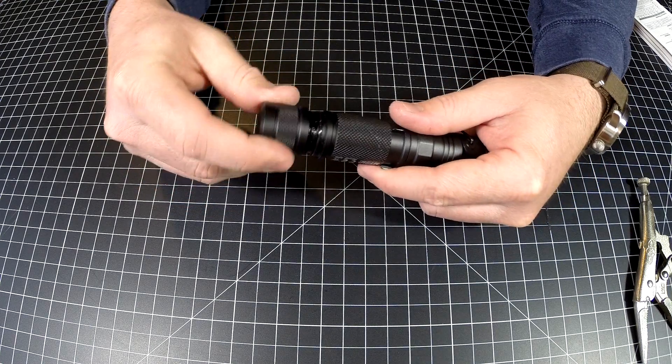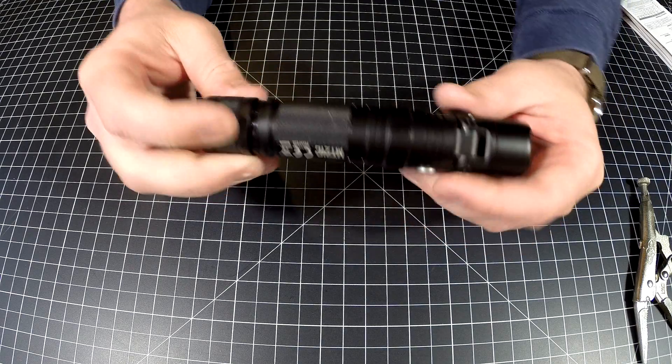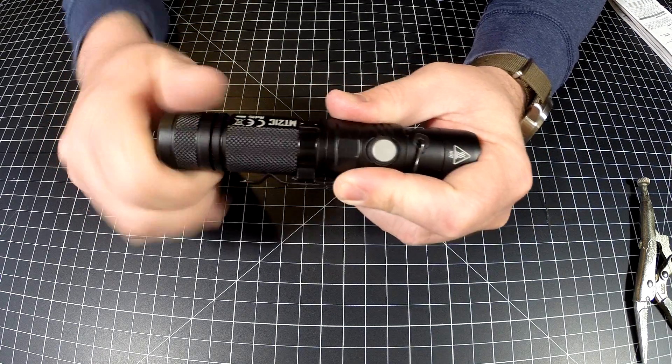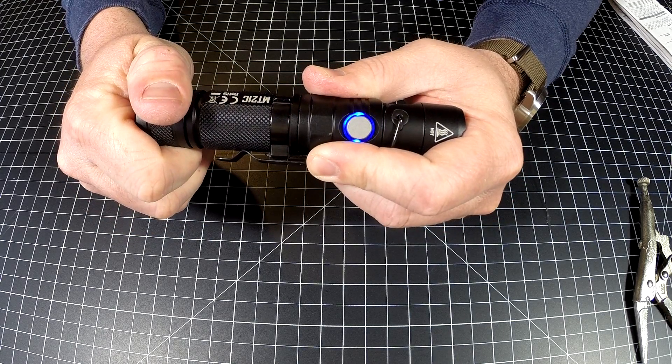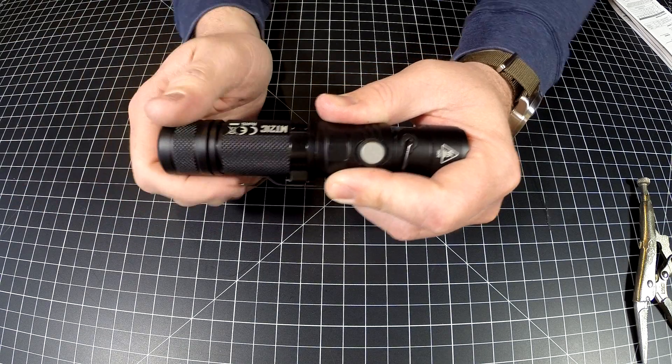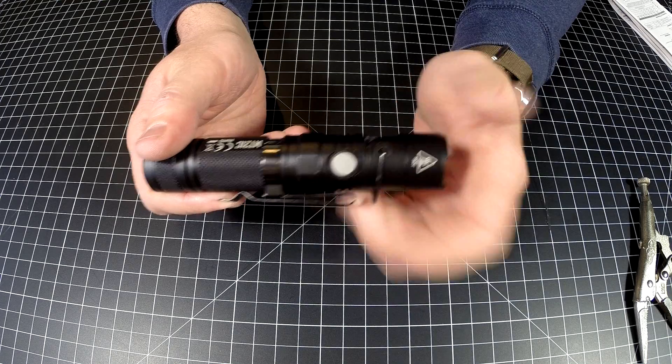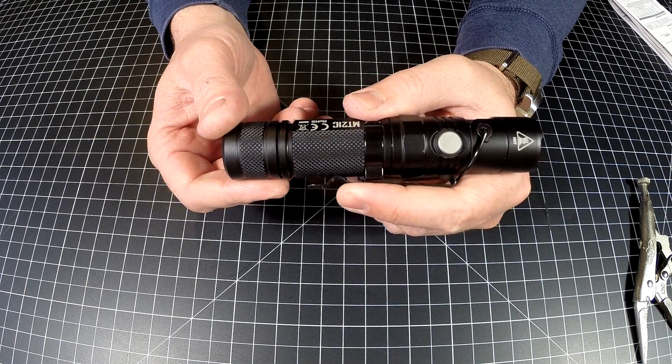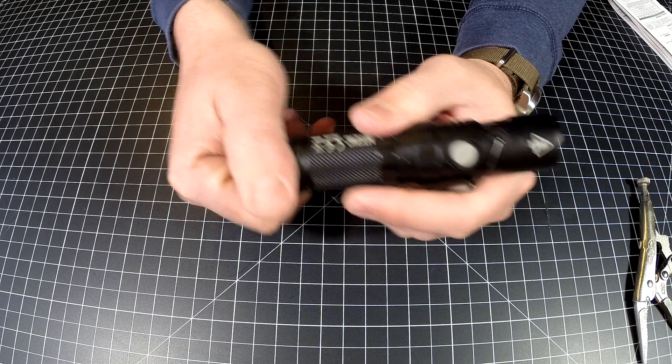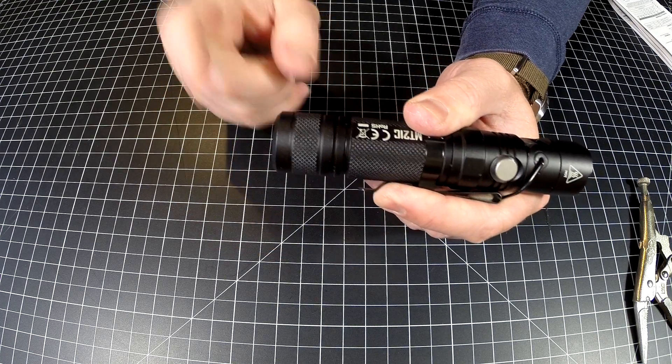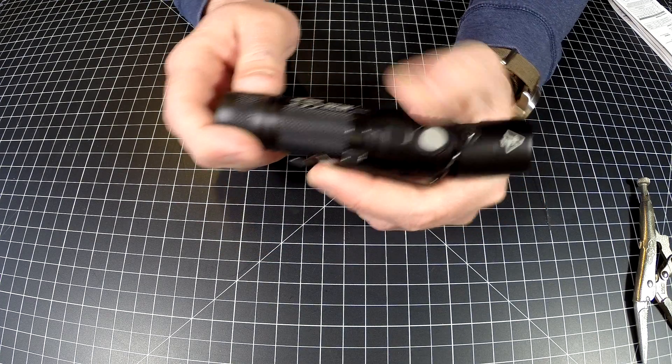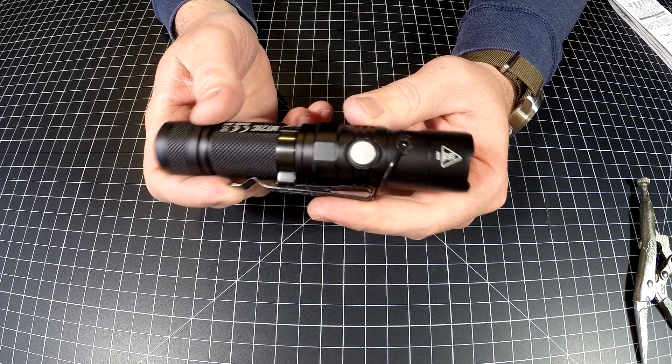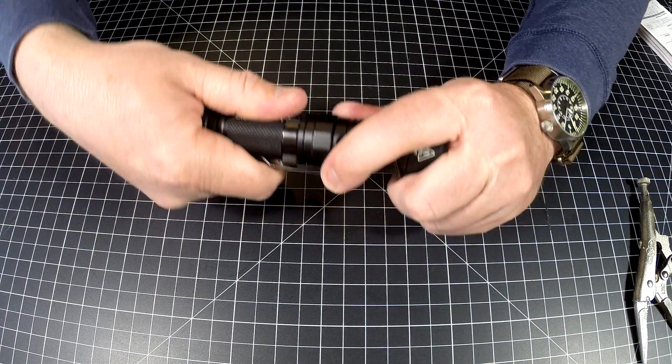It's got IPX8 waterproofing with really thick O-rings. As soon as you screw this down and the light gets electricity established, it goes right into battery checking mode, which tells you the voltage. If you're worried about your light accidentally turning on, you can turn your tail cap a quarter turn and it'll be locked out. As soon as you turn it back, it'll start blinking and let you know your battery level.